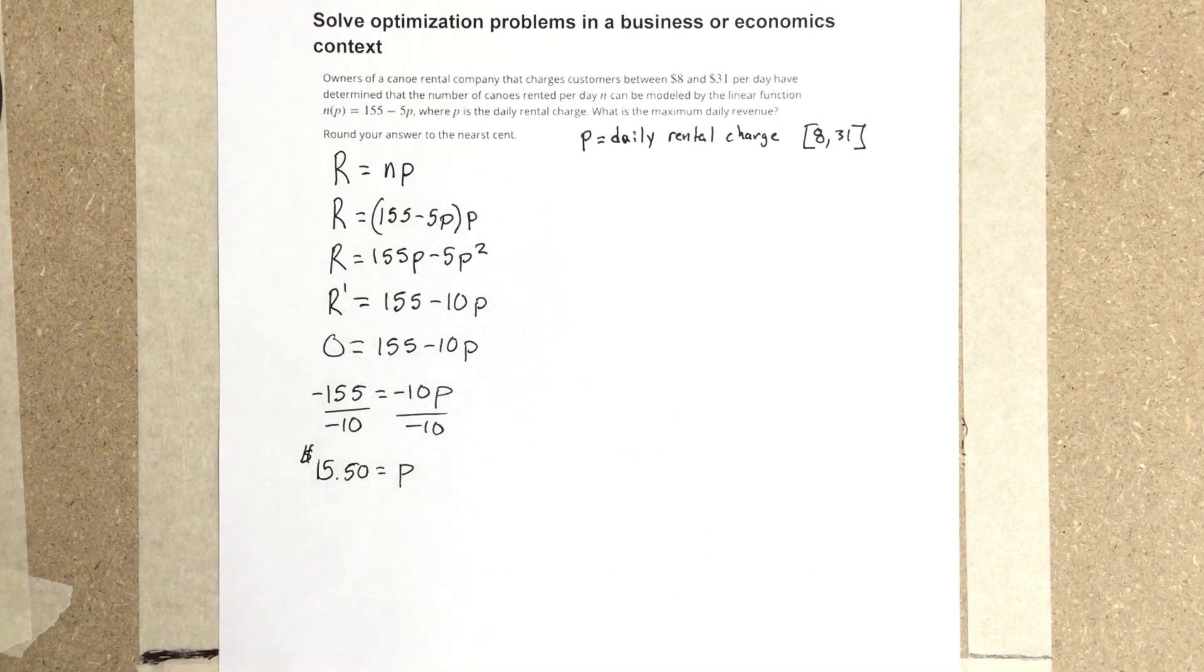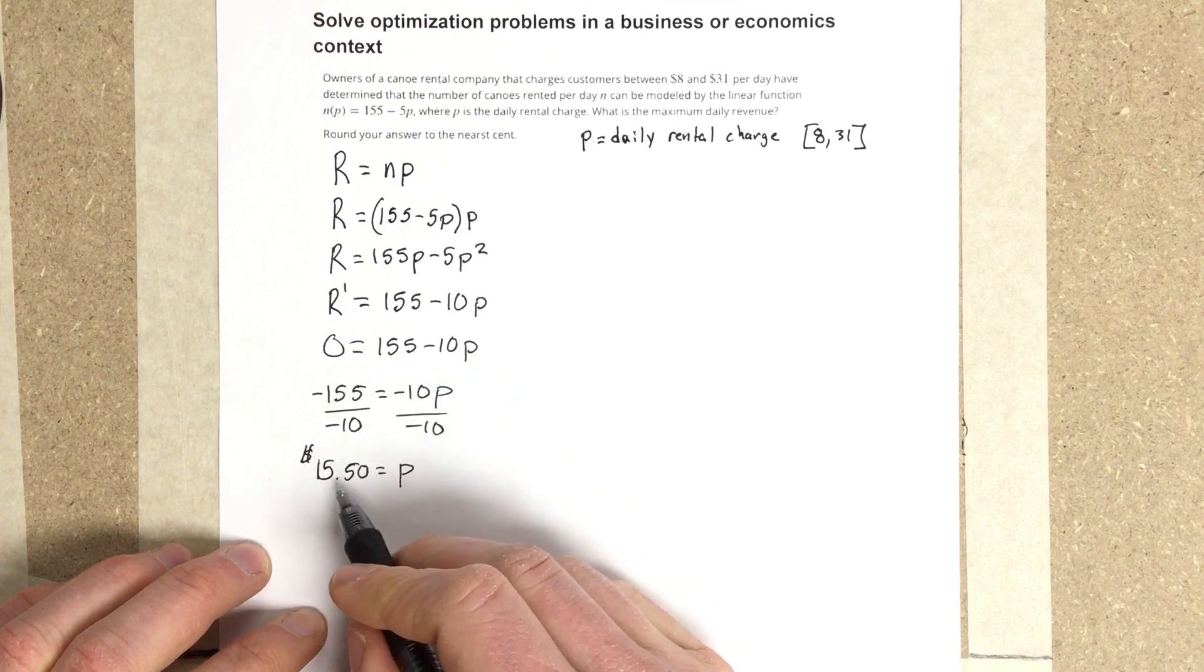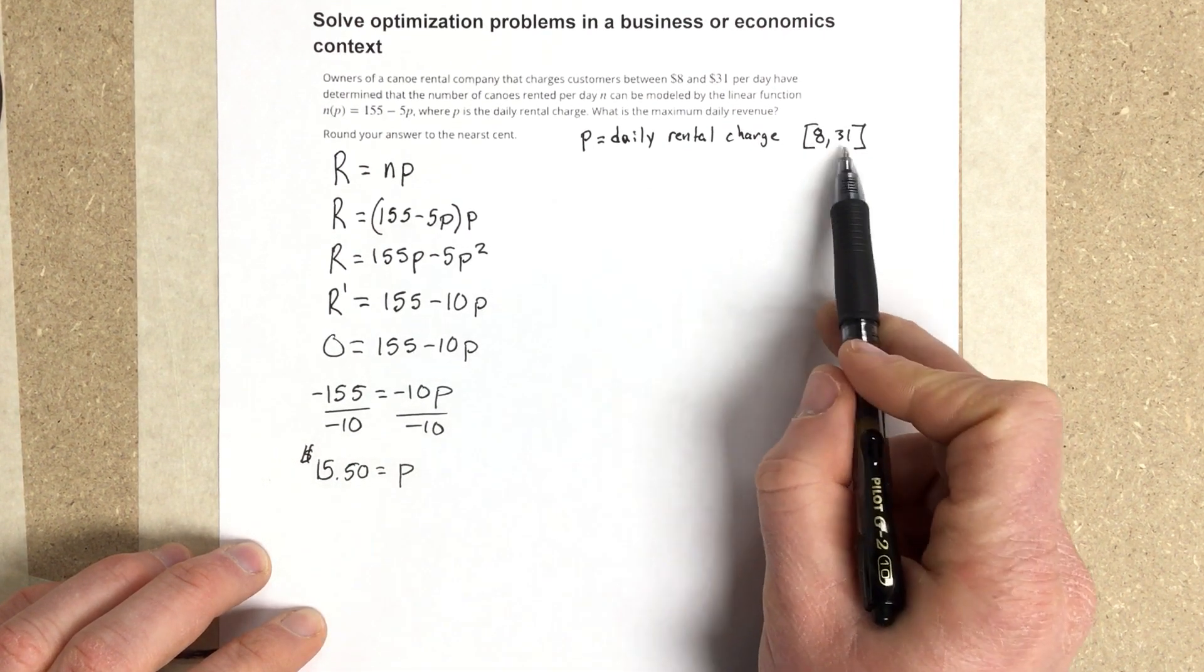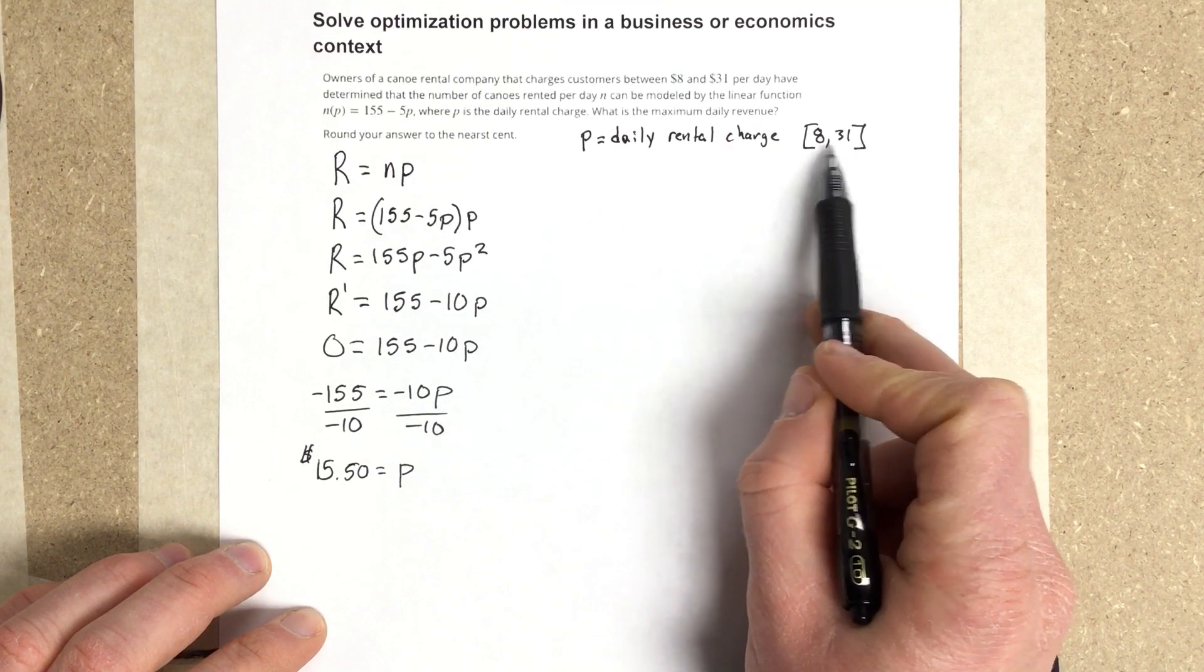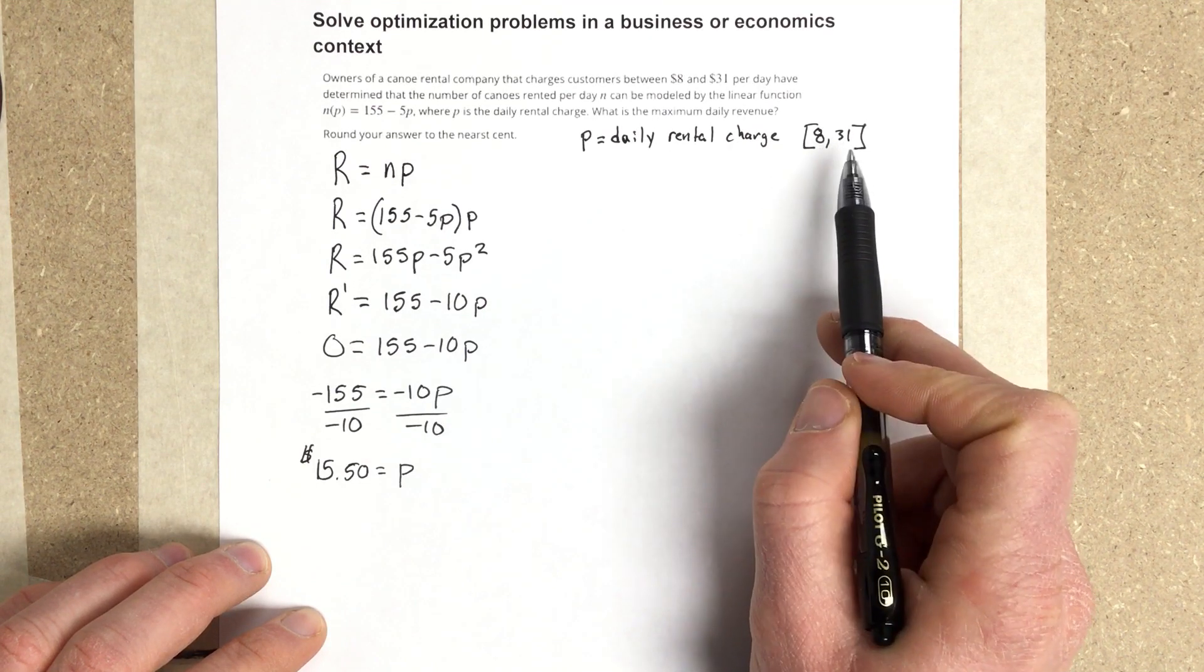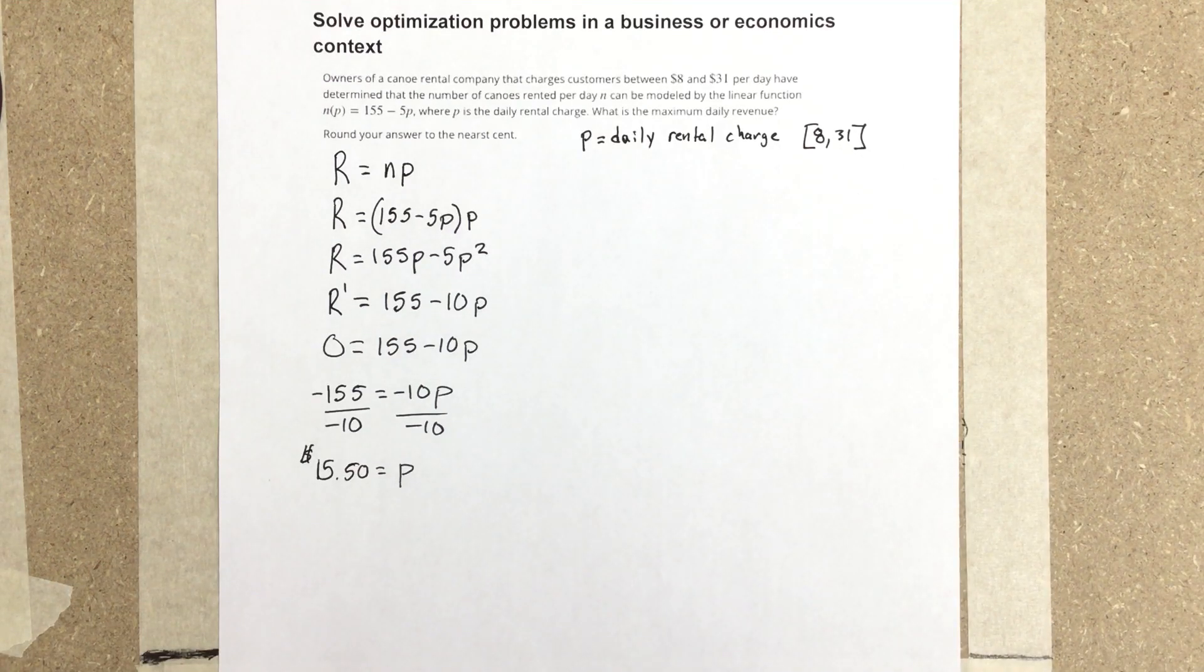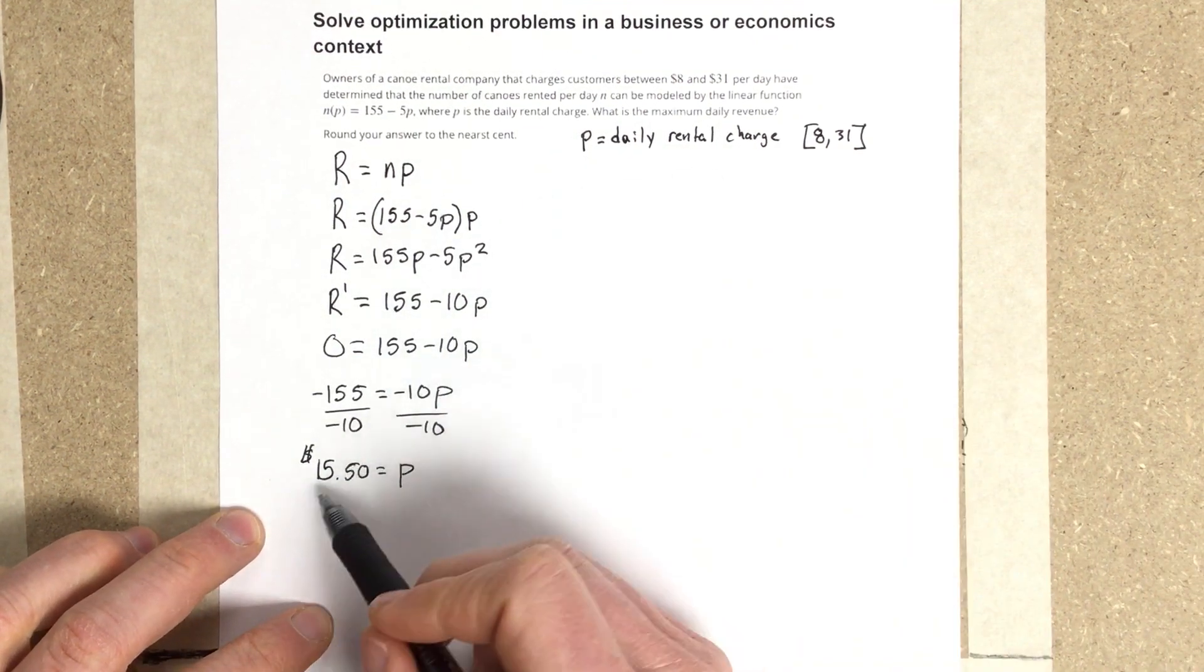Now we want to make sure that that actually maximizes the revenue. So we want to test this point because we know this is a critical point, and it's the only one inside of this bounded region. So basically, based on the theorems that we've talked about, the extreme value theorem,